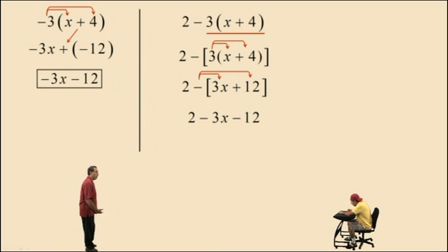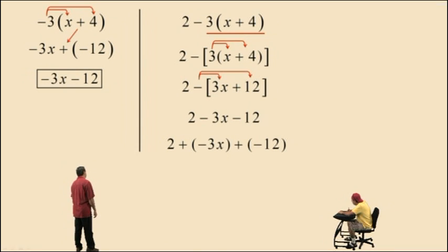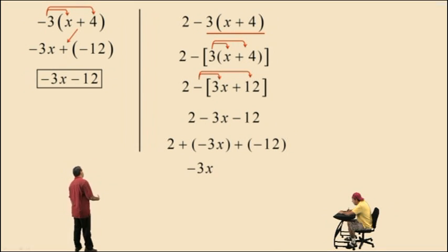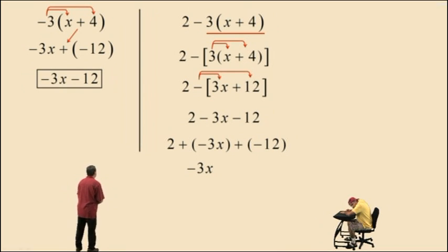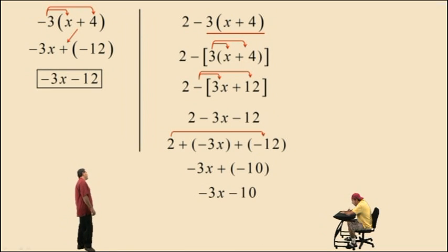Now we have to combine like terms. Order of operations says we work left to right, but we're going to rewrite these subtractions as adding negative numbers. So we get 2 plus a negative 3x plus a negative 12. Being that everything is being added, we can go in any order. We write our variable term first: negative 3x. Then we combine 2 and negative 12: 2 plus a negative 12 is negative 10. Adding a negative 10 is the same as subtracting a positive 10, so our result is negative 3x subtract 10 — that is our final answer.